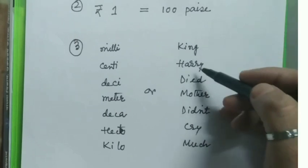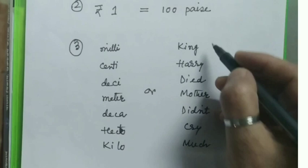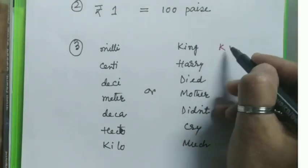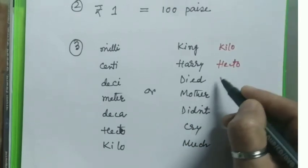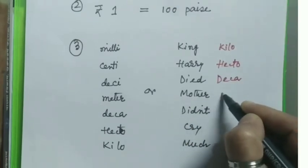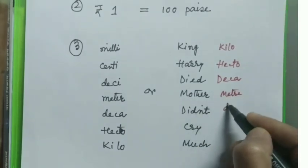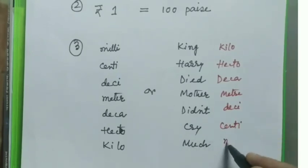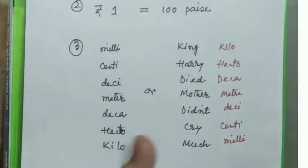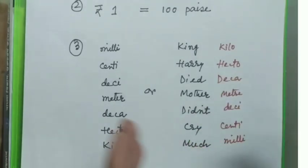Here's another thing I have written - I know you all know this: King Harry Died Mother Didn't Cry Much. Here King stands for kilo, Harry for hecto, Died for deca, Mother for meter, Didn't for deci, Cry for centi, and Much for milli.